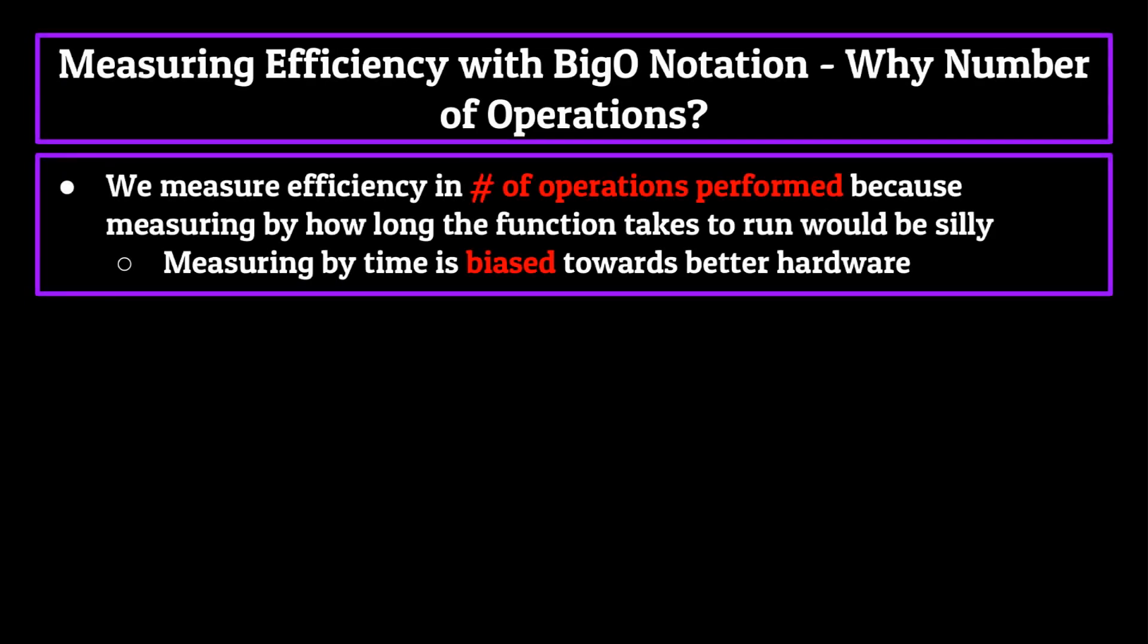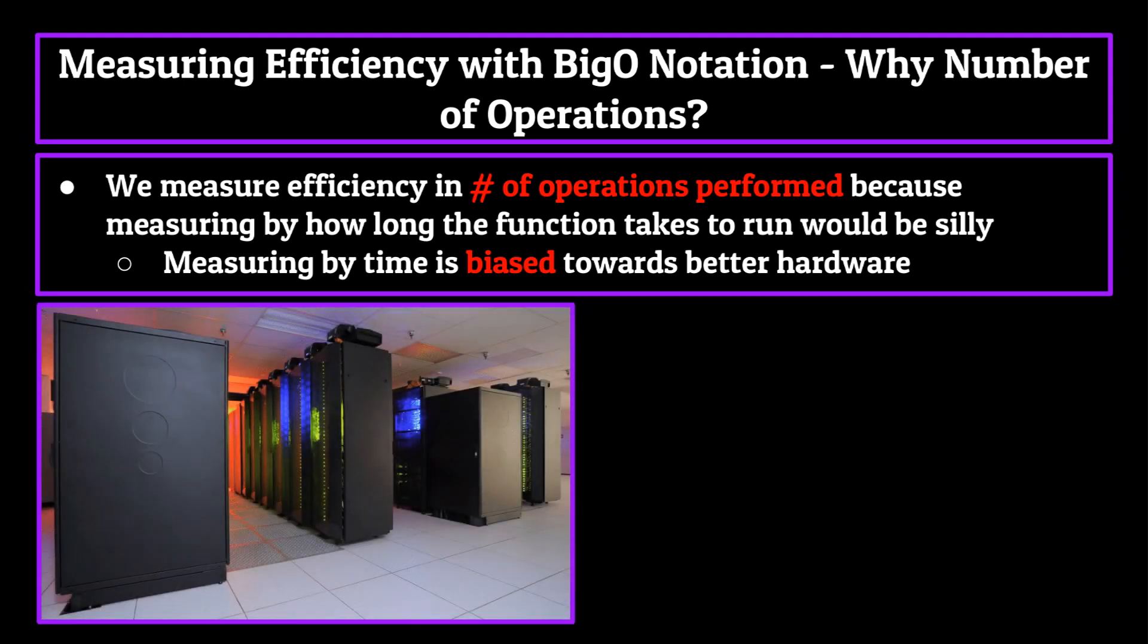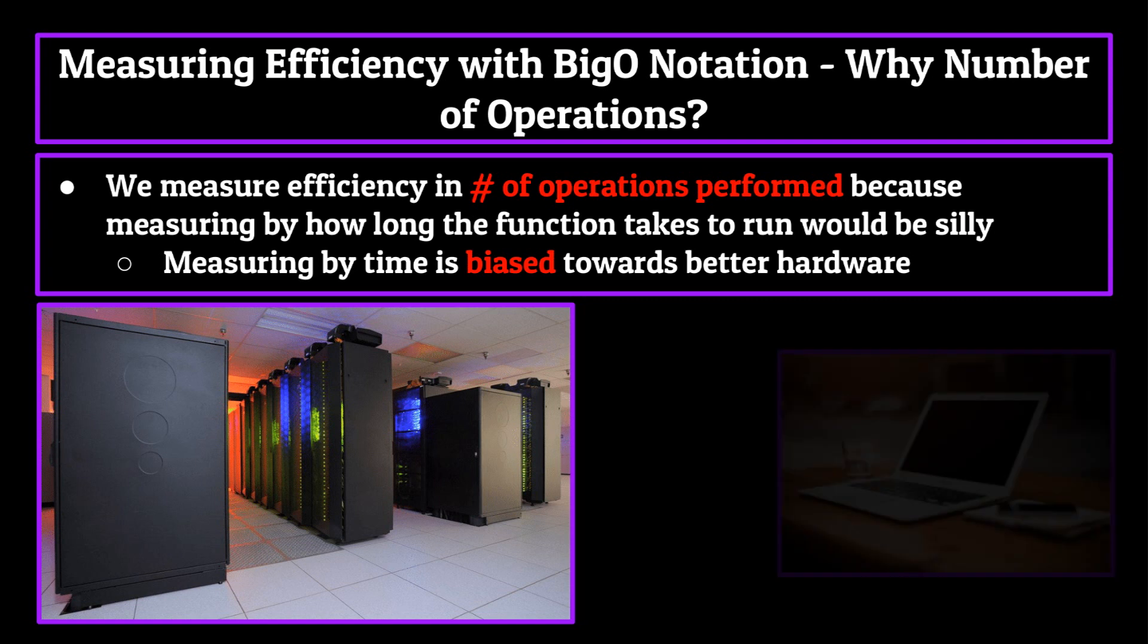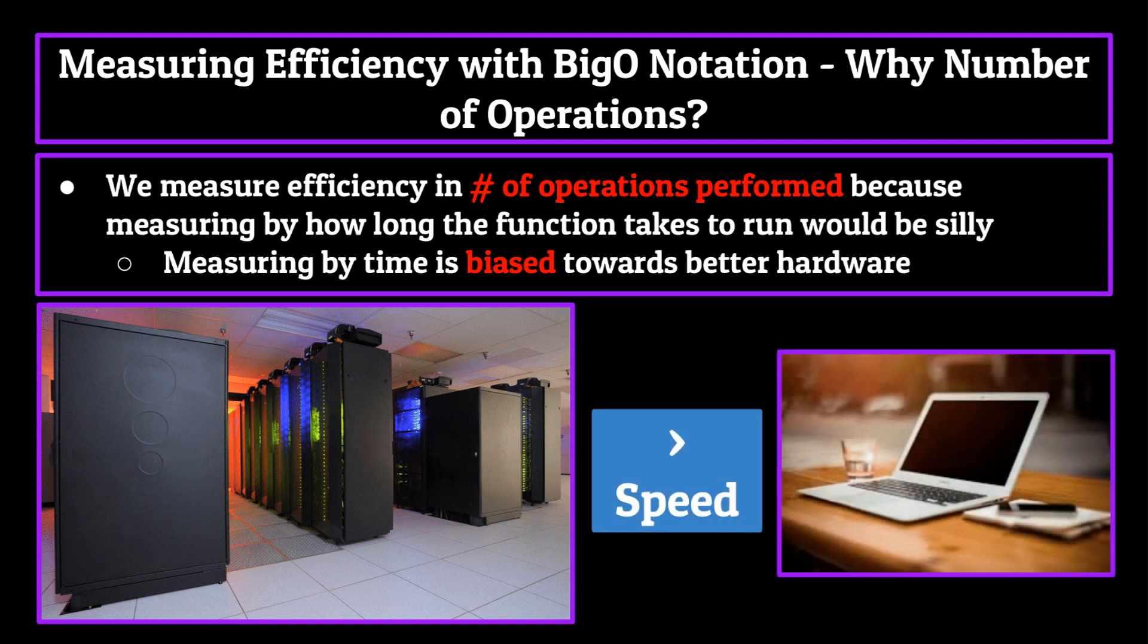We measure the efficiency of these four functionalities in the number of operations performed because measuring by how long the function takes to run would be silly. Measuring by time is highly biased by the hardware used to run the function—a supercomputer used by Google is obviously going to be able to search through a data structure much faster than a laptop. So Big O notation time complexity equations return the number of operations instead, to eliminate the bias in processing power that exists.